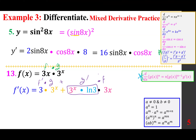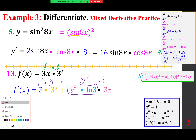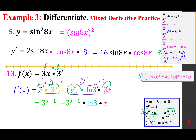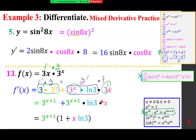We are done with calculus. We find a common factor and simplify. Writing 3 as 3^1, the term with 3 times 3^x becomes 3^(x+1) by the exponential rule a^m times a^n = a^(m+n). The same applies to the other term. Taking 3^(x+1) as the common factor, we are left with 1 and x ln 3, giving the final answer 3^(x+1)(1 + x ln 3).